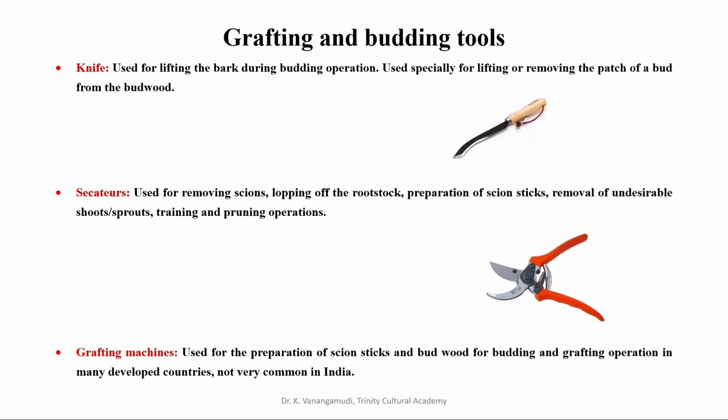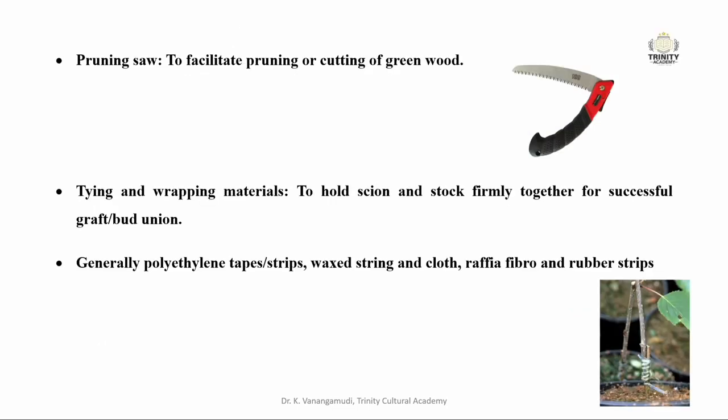Next is the secateur, an important tool for a propagator or nursery man, used for removing scions, lopping off, removal of undesirable shoots, training, and pruning operations. It is made of carbon steel blade giving a smooth cut to the scions and stocks. Nowadays in many developed countries, grafting machines are developed and commercially used for scion preparation and budwood for budding and grafting operations, though not very common in India. The pruning saw is made of long and widely set teeth to facilitate pruning and cutting of greenwood.